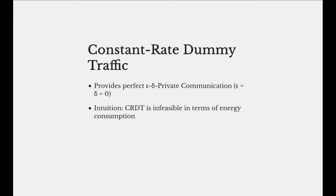However, constant-rate dummy traffic has its downsides — it completely fills all links with traffic. We know from many anonymity networks that they refrain from using constant rate dummy traffic because of the traffic overhead it introduces. The main concern in home automation systems is energy efficiency. The more packets we transmit, the more energy the system consumes, and if it's a battery powered system — which many wireless systems are — this reduces battery life, meaning higher costs and higher inconvenience for the users who have to exchange the batteries more often.